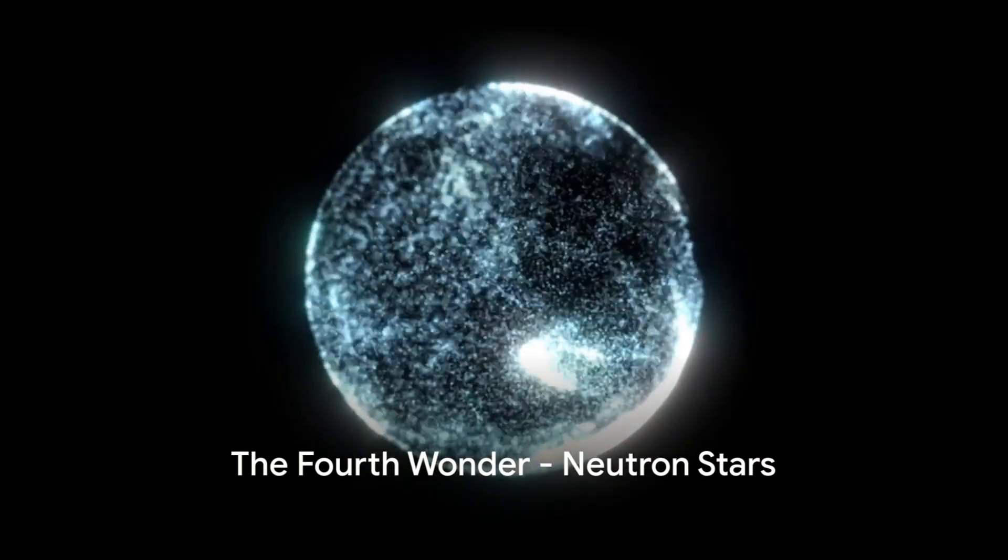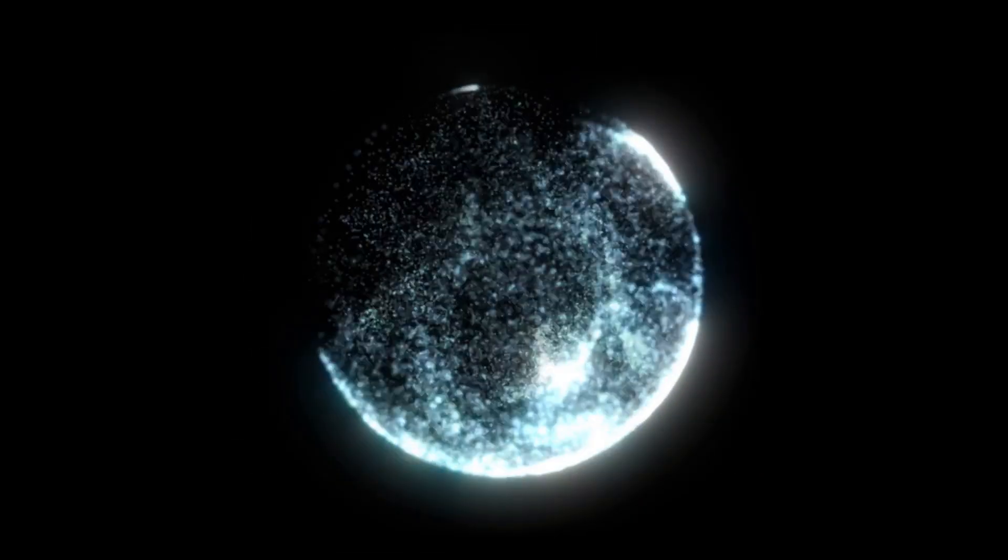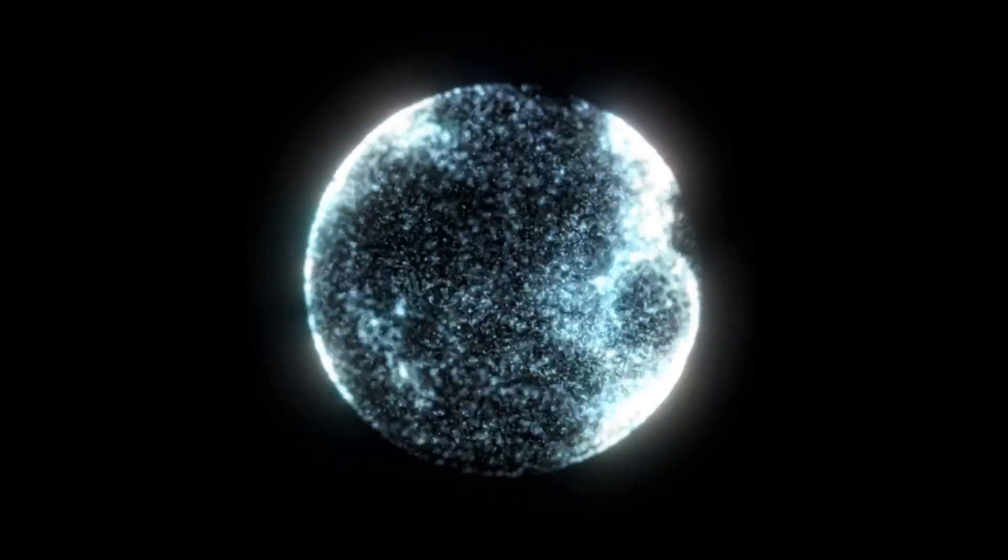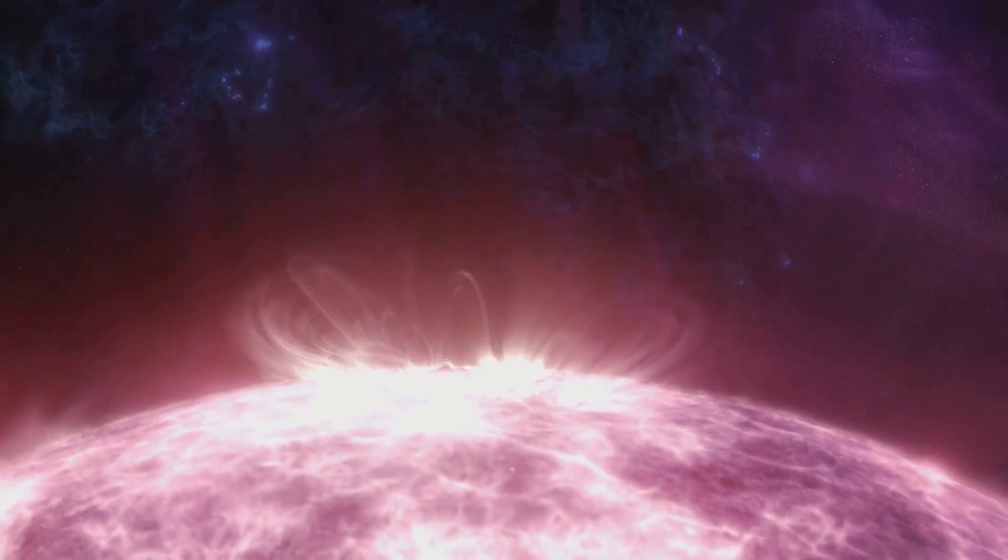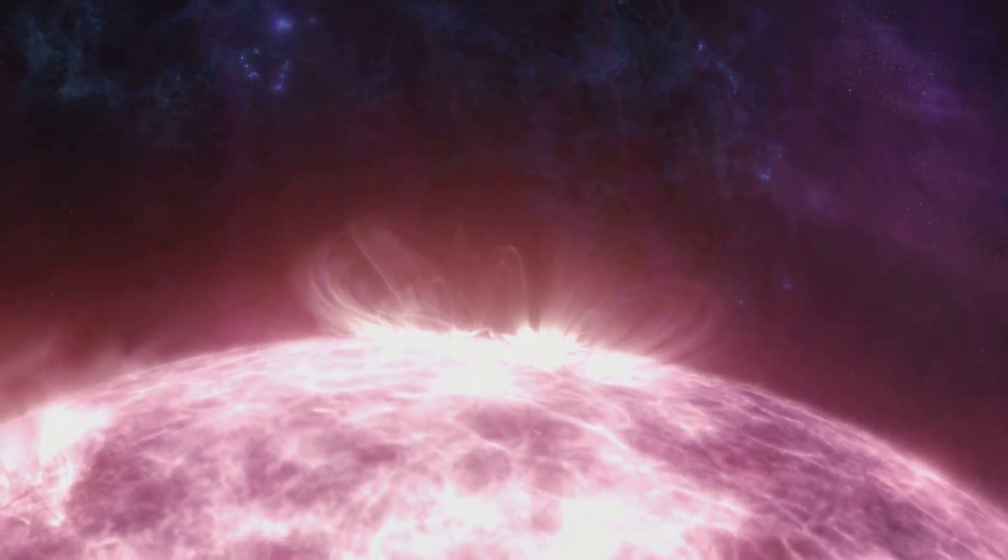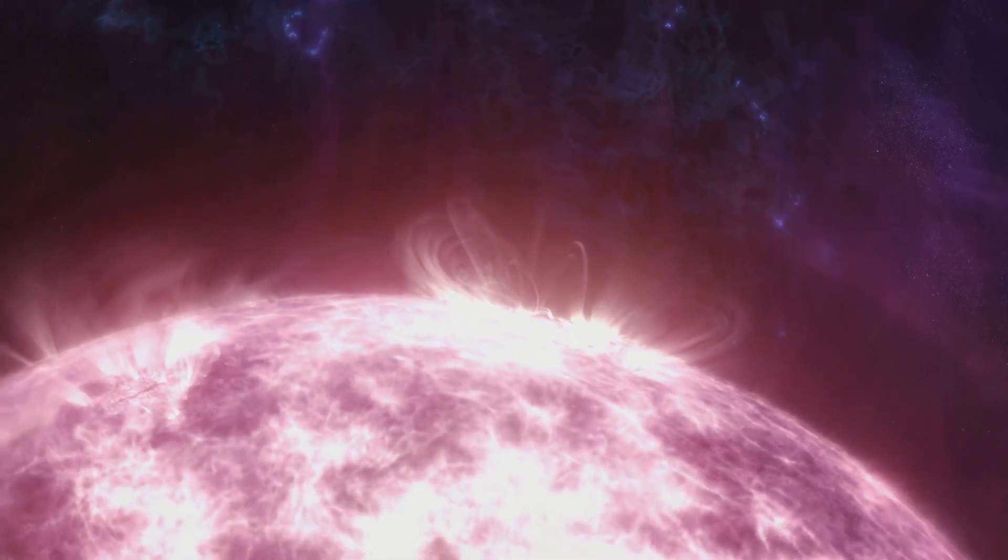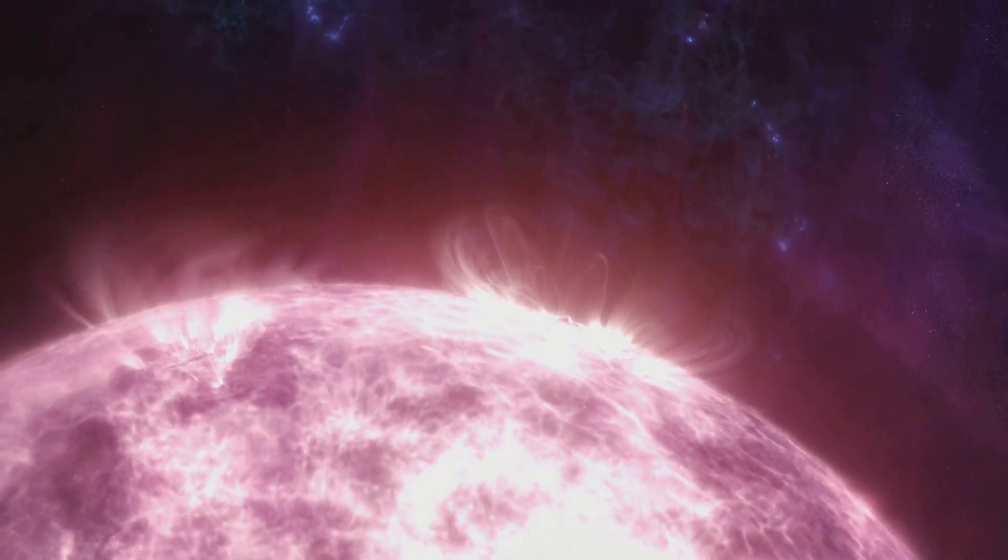At number 4, we meet the incredibly dense neutron stars. Born from the fiery death of a massive star, a supernova explosion, these celestial bodies are anything but ordinary. Picture this: a star many times the size of our sun collapses under its own gravity, imploding into a dense core. This is the birth of a neutron star.